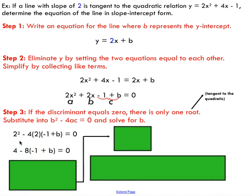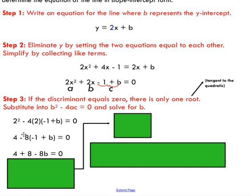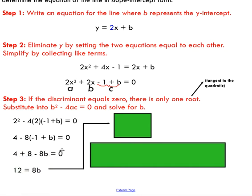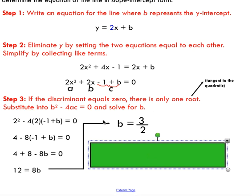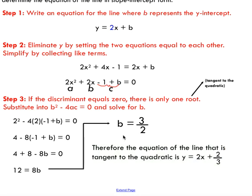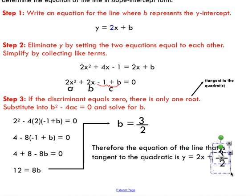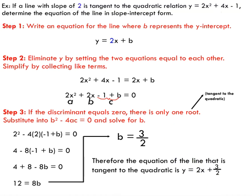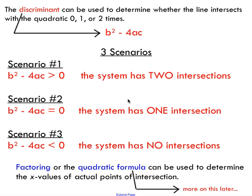We plug everything into the discriminant formula, substituting a, b, and c — where c is the expression (negative one plus b). Using the distributive property and collecting like terms, we get 12, then bring the negative 8b term over and divide by 8, giving b = 3/2. Substituting this y-intercept back into our line equation gives us the equation of the line tangent to the quadratic. This is a challenging problem, but it all comes down to applying our understanding of the discriminant in a linear-quadratic system.